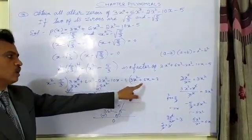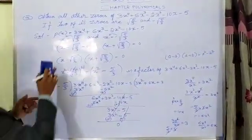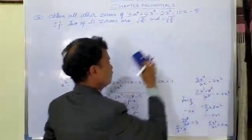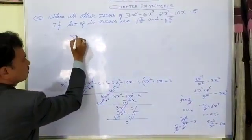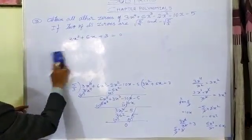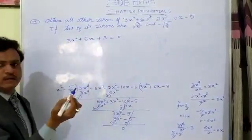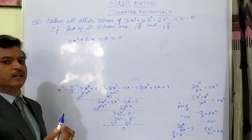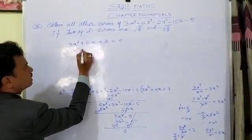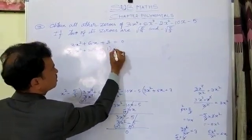The quotient we got is 3x² plus 6x plus 3. Now we set 3x² plus 6x plus 3 equal to 0. We can take 3 as common, giving 3 times x² plus 2x plus 1 equals 0. To find the factors, we need to split the middle term.